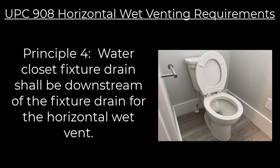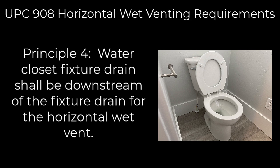UPC horizontal wet vent principle four: the water closet fixture drain shall be downstream from the fixture drain for the horizontal wet vent. This specifies that the toilet cannot be upstream from the wet vent — it can only be down past the lavatory. Principle five: only fixtures within the bathroom group are allowed to be connected to a wet vent.